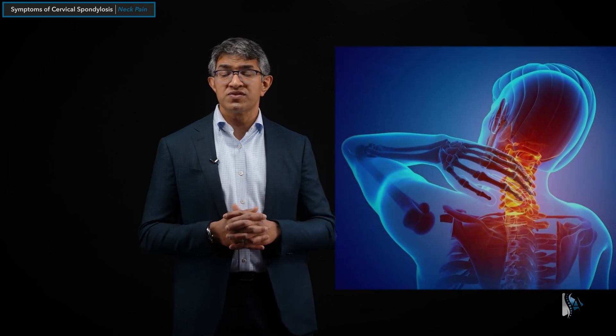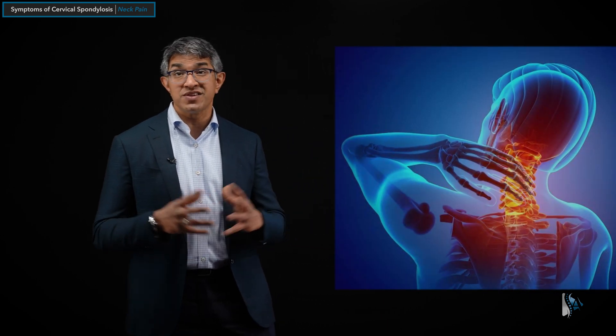We have now discussed two of the three patterns of symptoms that we see with cervical spondylosis. We discussed cervical myelopathy and the signs and symptoms associated with that, and we've discussed cervical radiculopathy. Both of those symptom constellations are related to nerves — either the spinal nerves or the spinal cord. The last category of symptoms to talk about is neck pain.